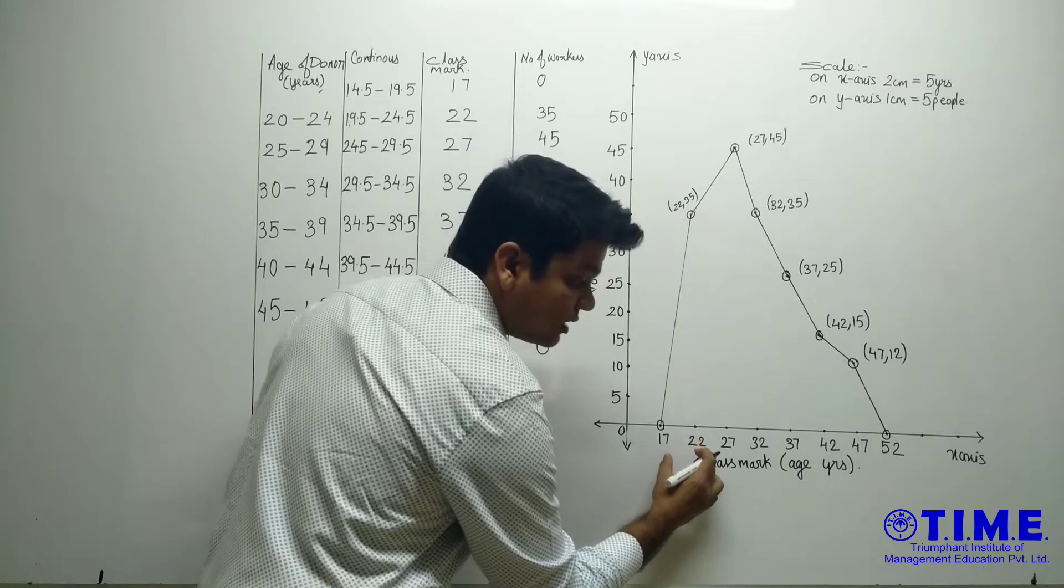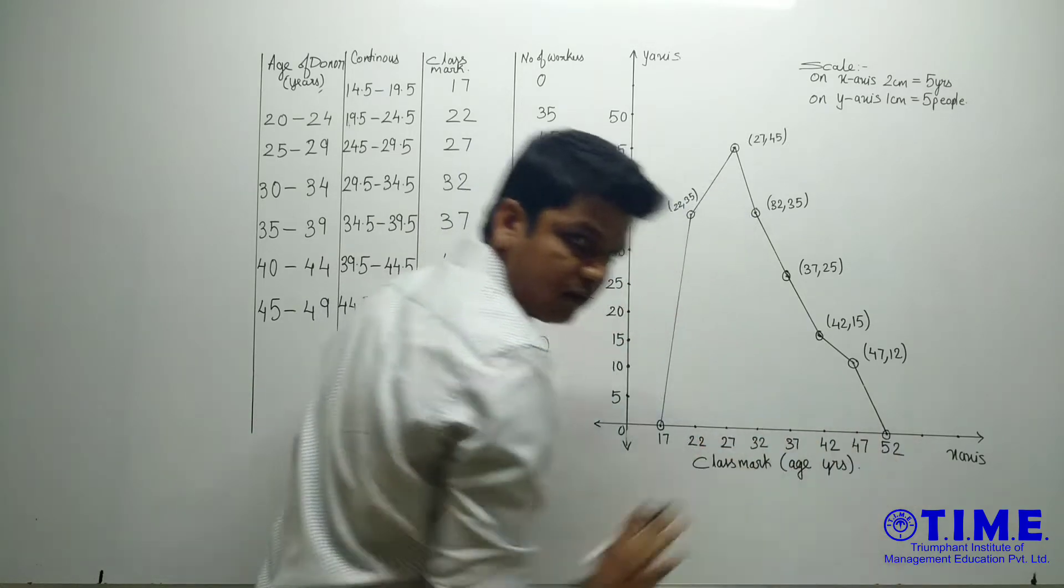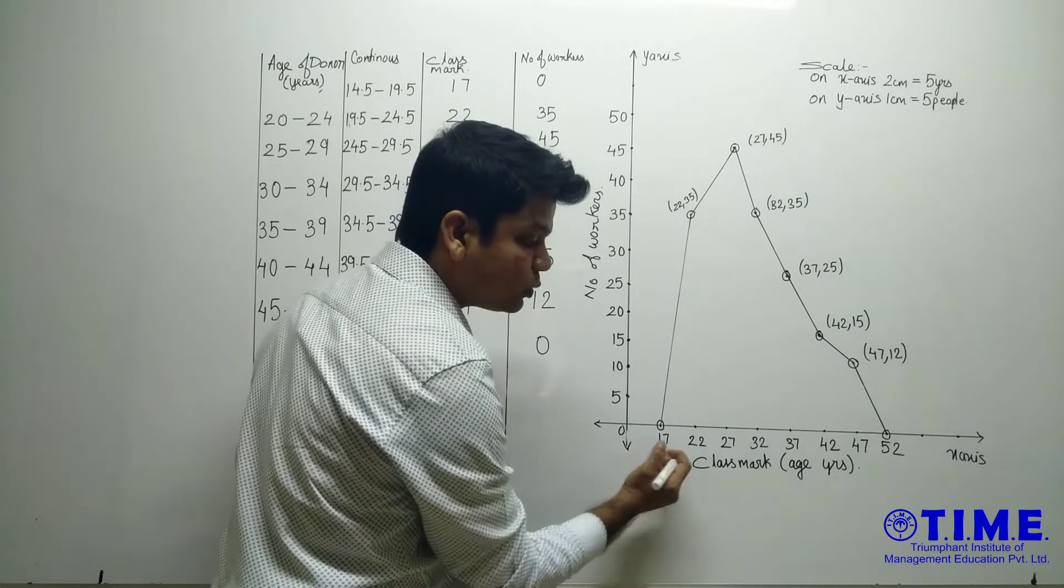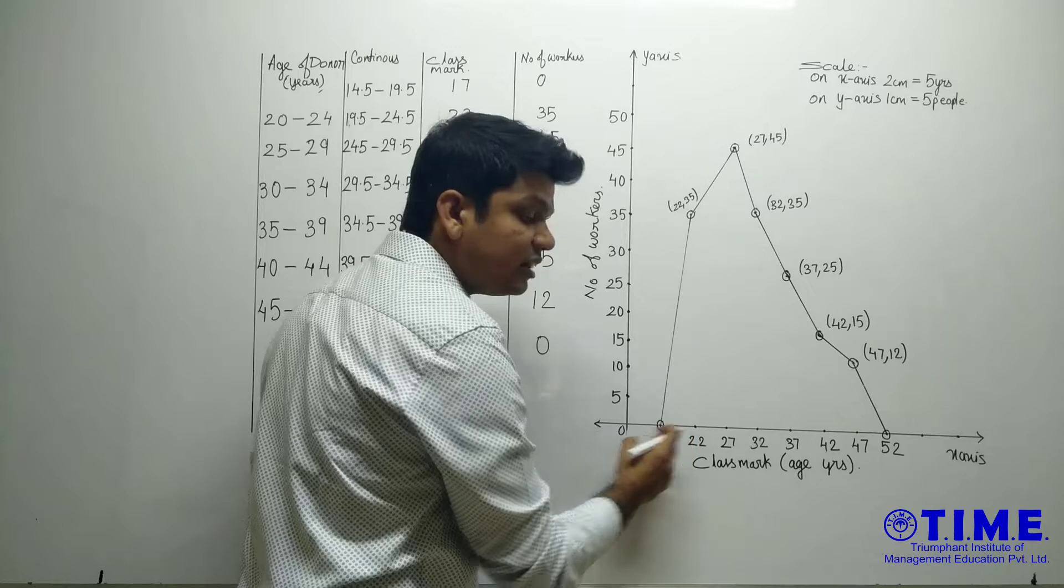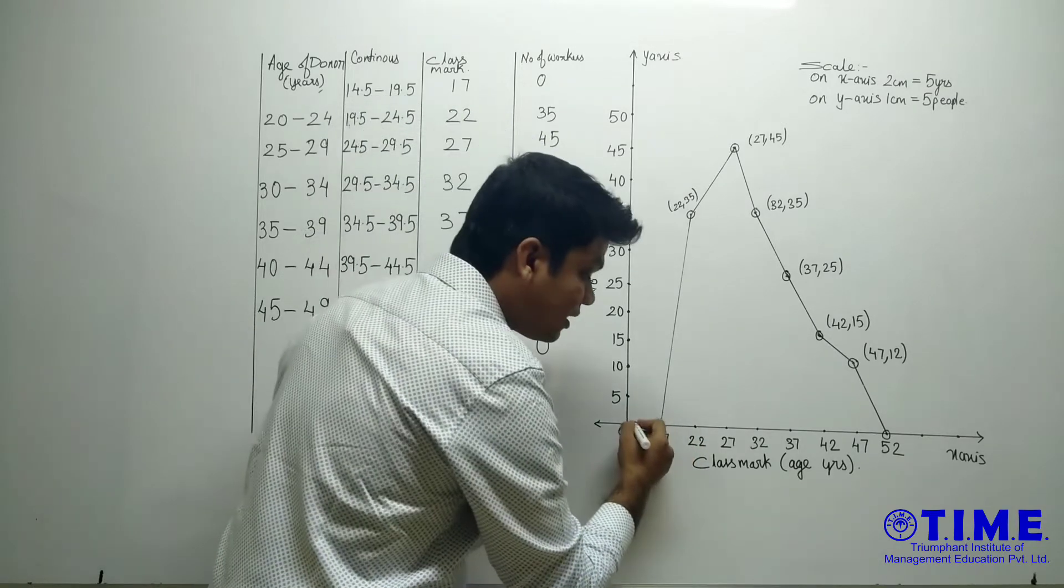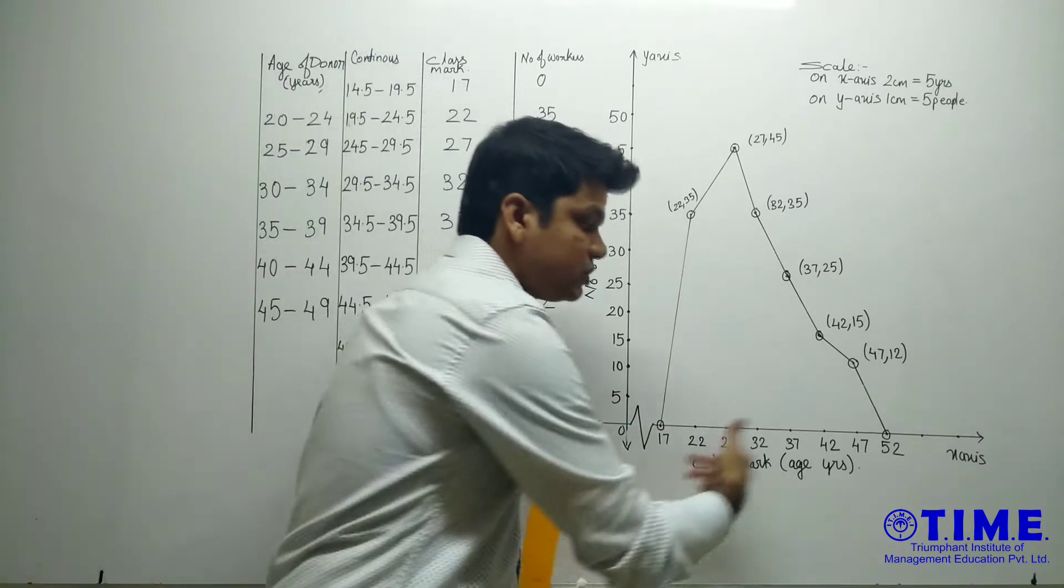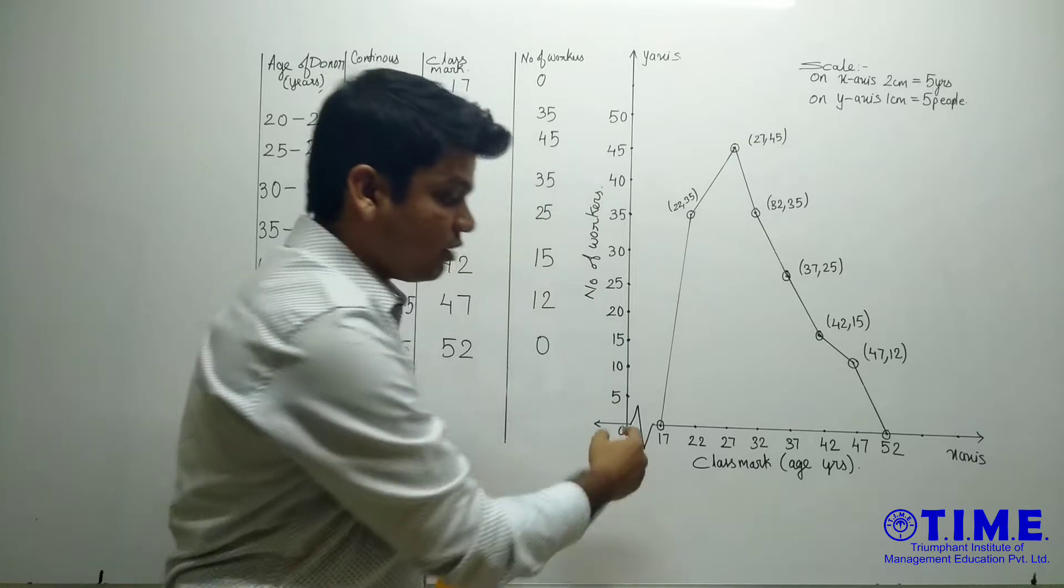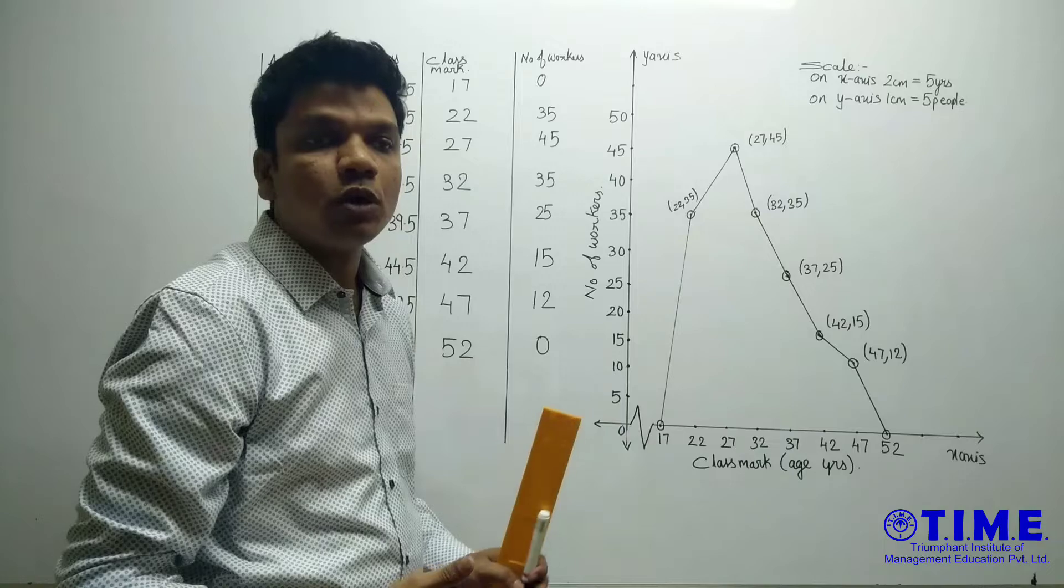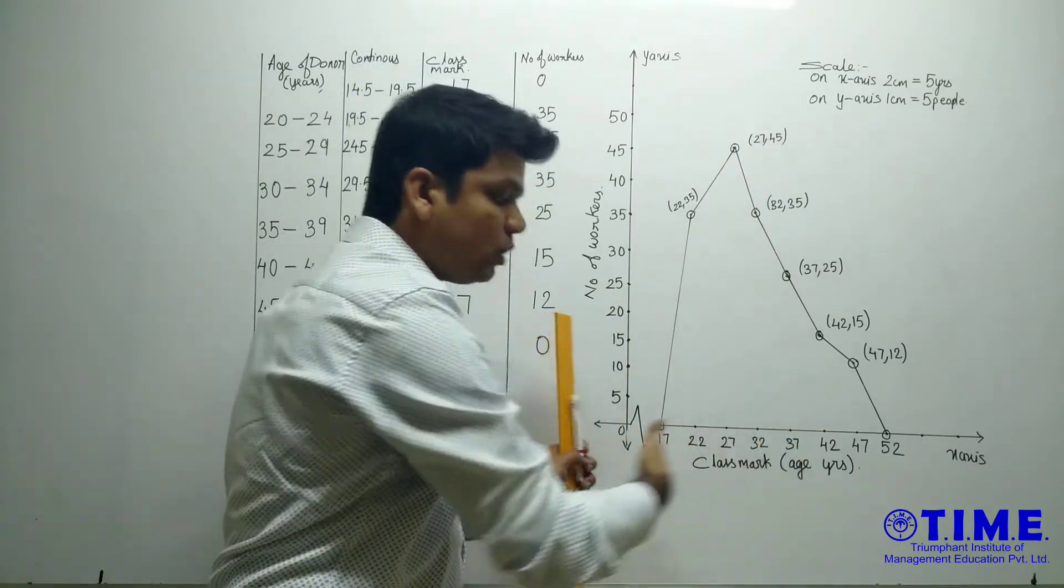Here, this gap is 5, 5, 5, 5, 5, 5. And here we are starting suddenly 0 to 17. So this is an uneven gap. So what we should add to it? That is kink mark. When the gap between the class marks and when we start is uneven, we should add a kink mark. Kink mark is nothing but like folding the paper. So we are folding that gap.